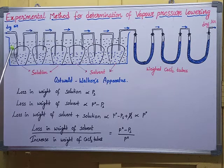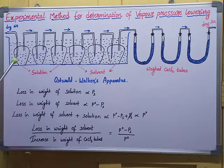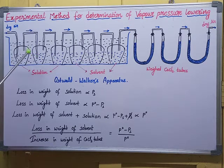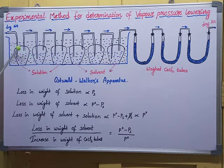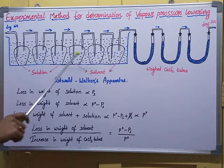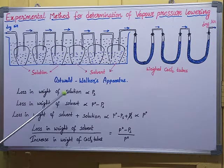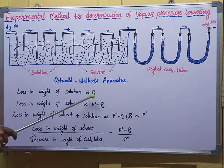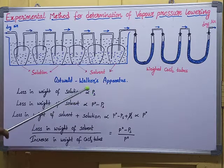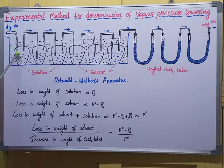As the air travels from one side to the other, it carries vapors from the solution bulbs onward. There is a development of vapor pressure, and there is some loss in weight of the solution bulbs because the air takes vapors from the solution bulbs. So the loss in weight of the solution is proportional to the vapor pressure of the solution (Ps), since only vapors of the solvent are being picked up.